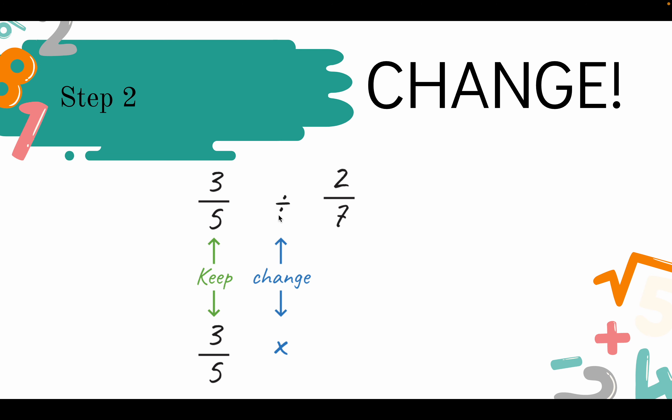Change. You have to change the division symbol into a multiplication symbol. And lastly, flip. You have to flip the last fraction, which is 2 over 7, to 7 over 2.